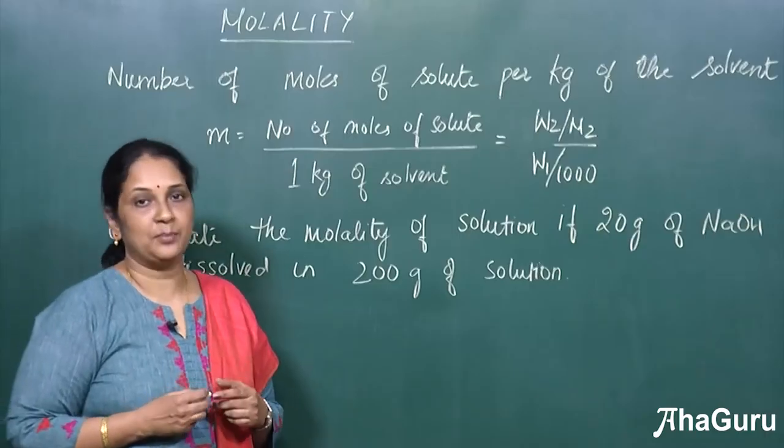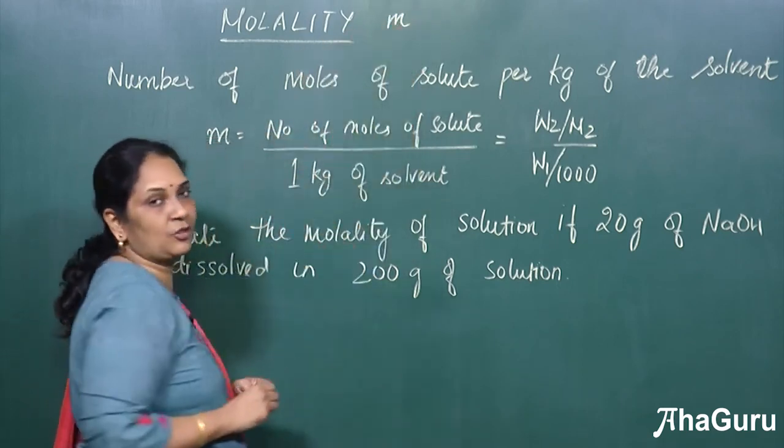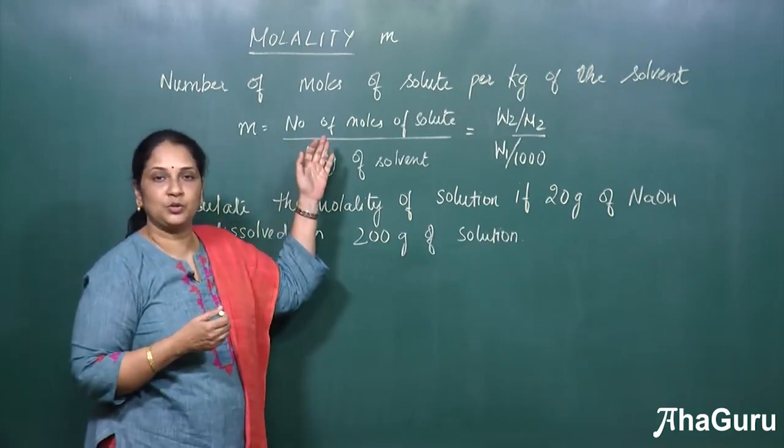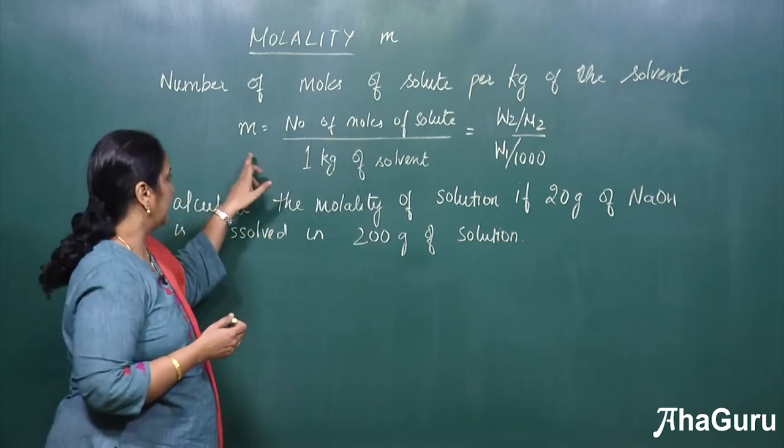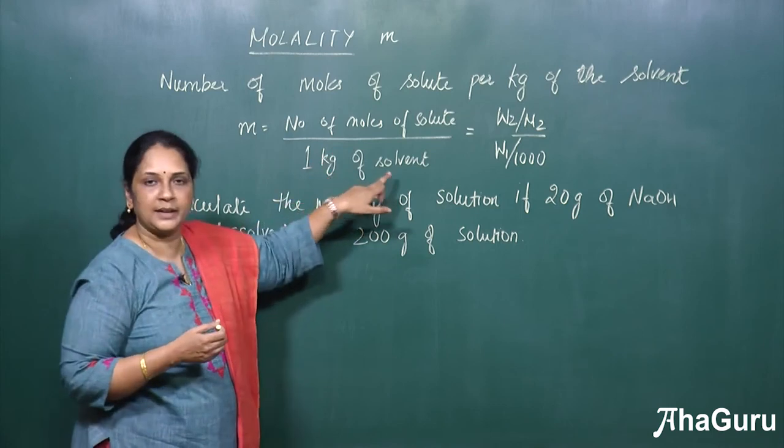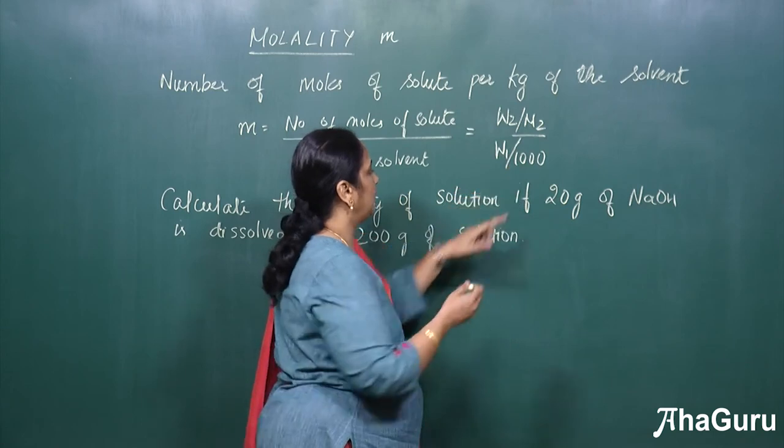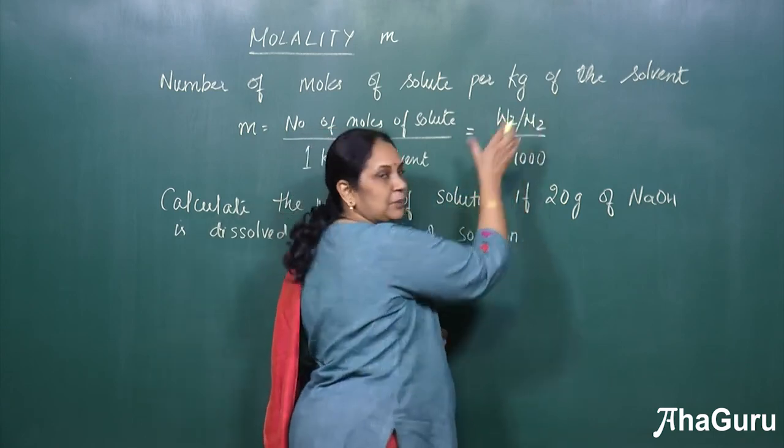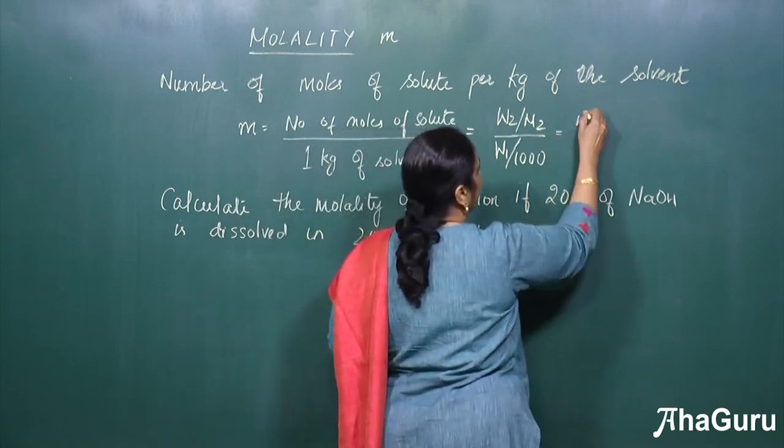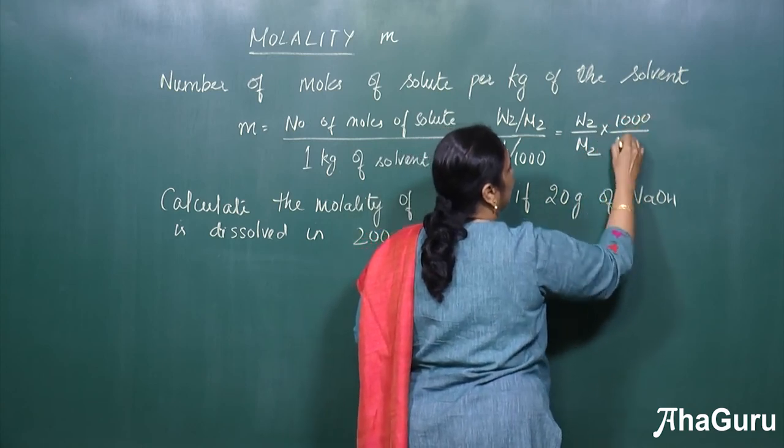Let us now calculate the molality of the solution, which is denoted by M. This is another concentration term. So what is molality? It is the number of moles of solute per kg of the solvent. That is, M is equal to number of moles of solute divided by 1 kg of solvent, which is given by W2 by M2 divided by W1 by 1000. This is with respect to solute and this is with respect to solvent. So rearranging this we will get W2 divided by M2 into 1000 divided by W1.